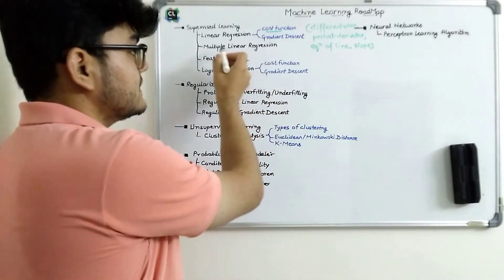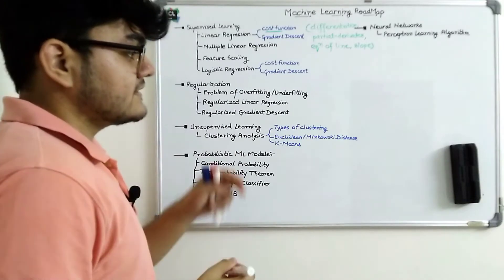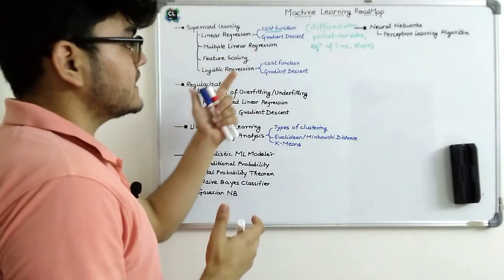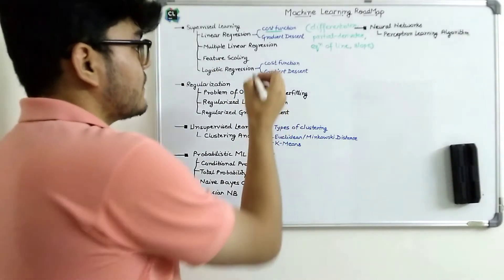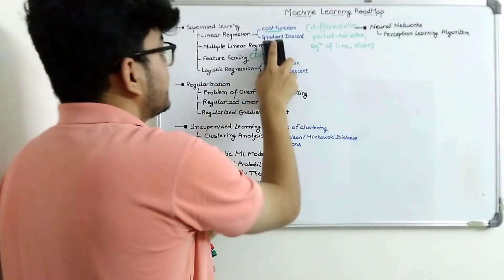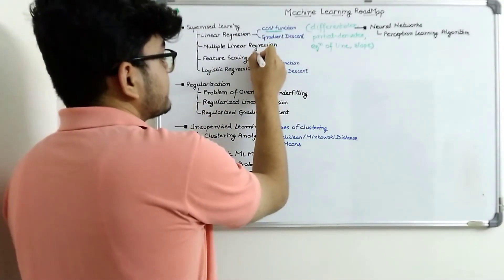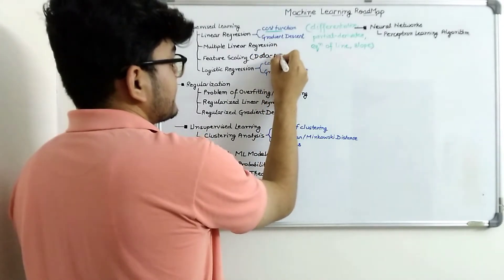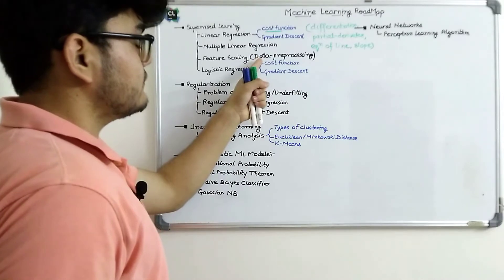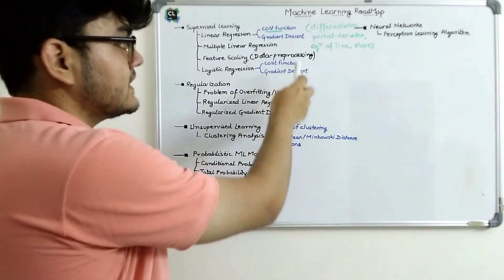The second part is multiple linear regression, which is another variant of linear regression. Then we have feature scaling, where we scale down the features so that the machine learning model can perform more easily. Feature scaling is essentially data pre-processing. If the dataset given to you is not pre-processed, the models will not be accurate.